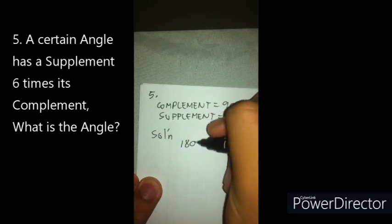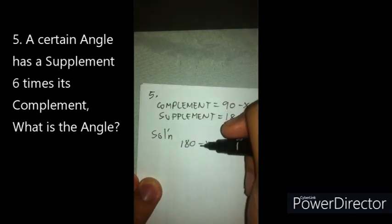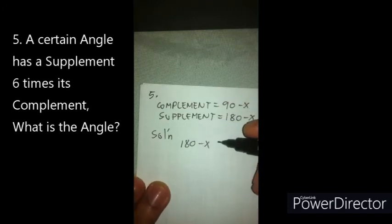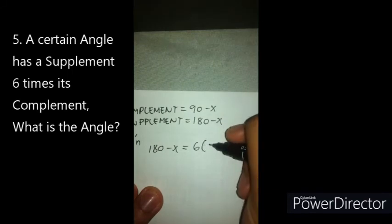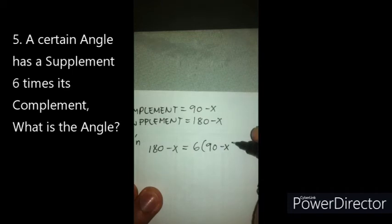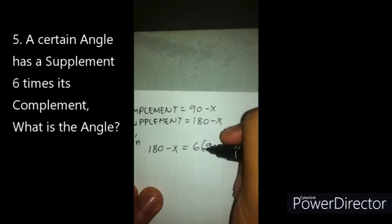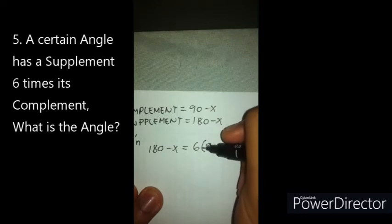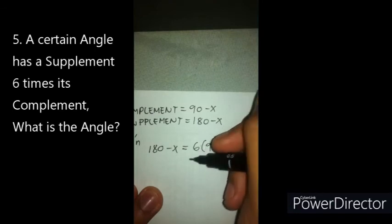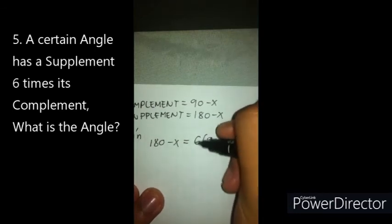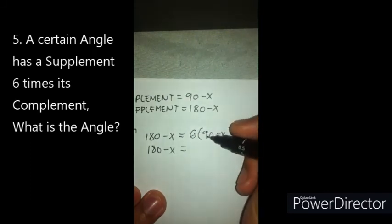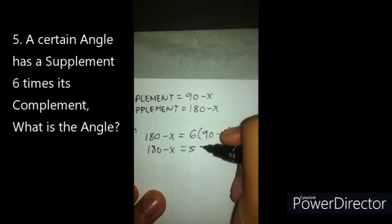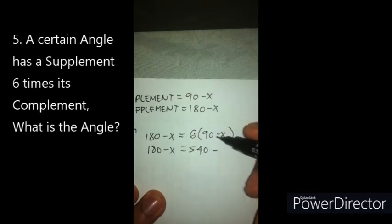The equation is: 180 minus x, which is our supplement, equals 6 times (90 minus x), which is 6 times the complement. So 6 times 90 is 540, minus 6x. This is why we have 6 on that side of the equation.